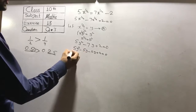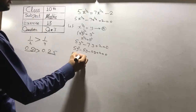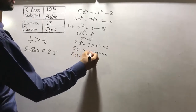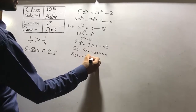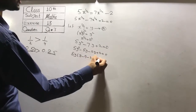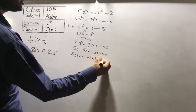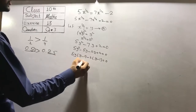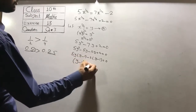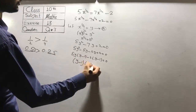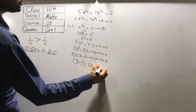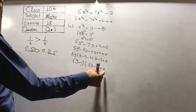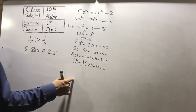In the first two terms we can take 5y common, and here we get y minus 1. In the last two terms we can take minus 2 common, and here we get y minus 1 is equal to 0. As a whole we can take y minus 1 common, and here we get 5y minus 2 is equal to 0. As two terms are multiplying and the answer is 0.